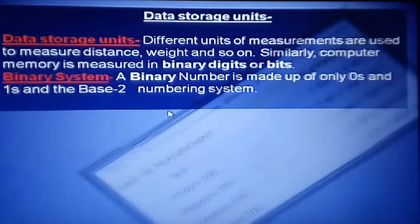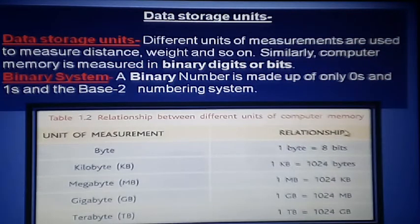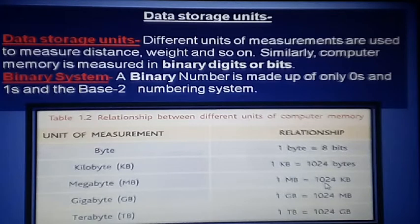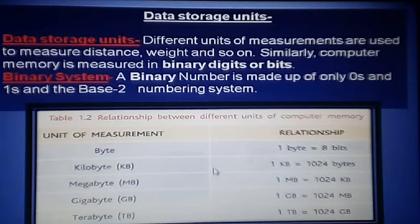The measurement of data units: a bit is the smallest unit. One byte equals 8 bits. 1 KB equals 1024 bytes. 1 MB equals 1024 KB. 1 GB equals 1024 MB. 1 TB equals 1024 GB. You can see that every conversion uses 1024. That is the capacity measurement of data and information.